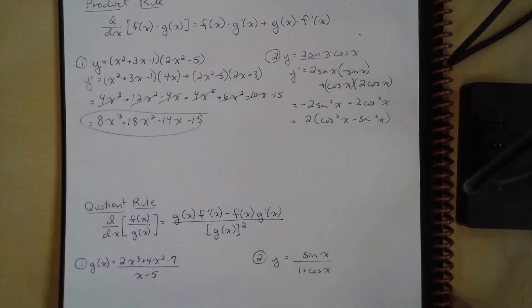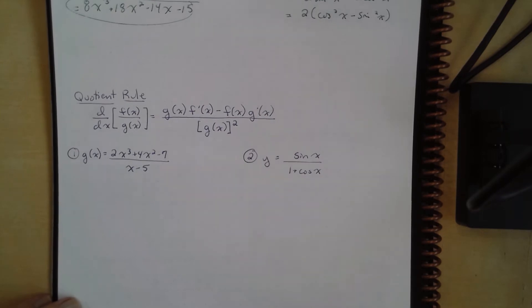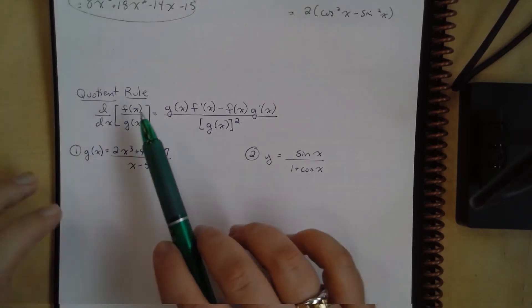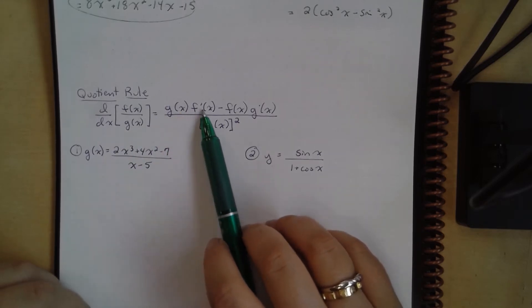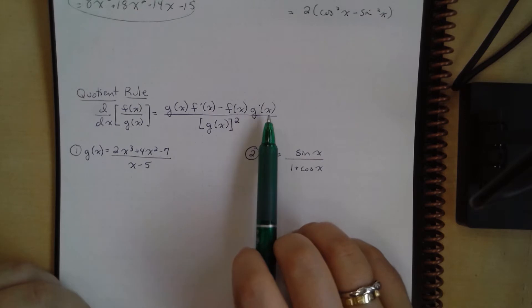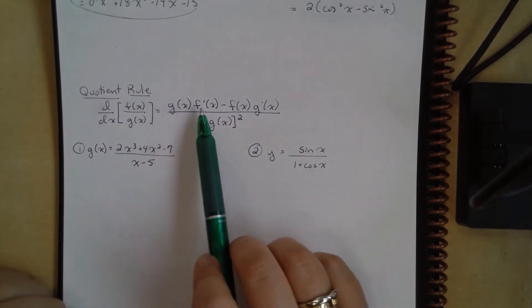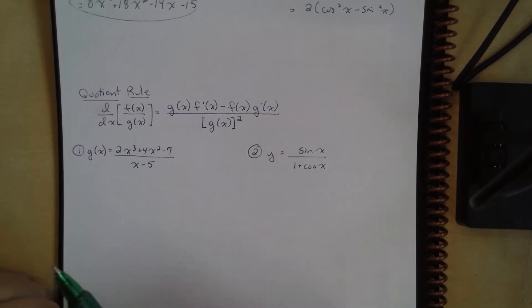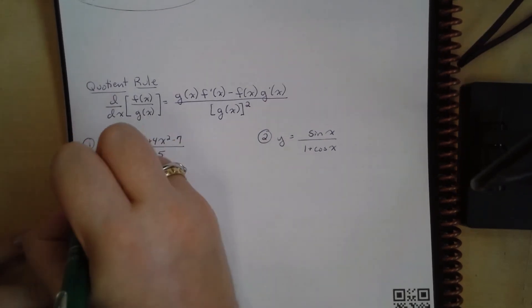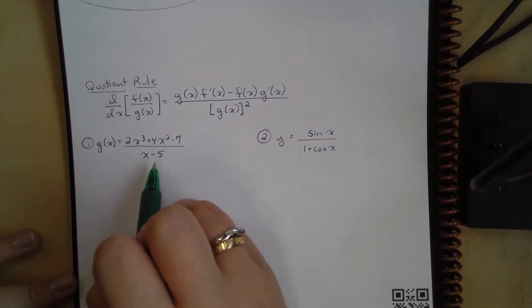Now let's talk about the quotient rule. The quotient rule states that the derivative of f(x) over g(x) is equal to g(x) times the derivative of f(x) minus f(x) times the derivative of g(x), all over g(x) quantity squared. I think of this as the bottom times the derivative of the top minus the top times the derivative of the bottom over the bottom squared. Let's do this example: g(x) equals 2x cubed plus 4x squared minus 7 over x minus 5.